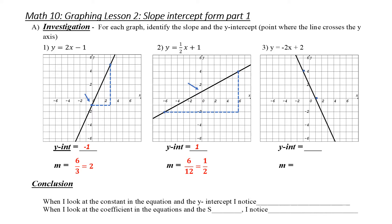Finally, example number three. Notice it's a negative slope. Again, what's my y-intercept? It is two. What's my slope? My rise and my run are there. Notice that to go from one point to the other, I have to go negative for either rise or run. Therefore, it's going to be down four and over two, or a slope of negative two.